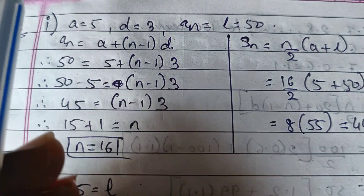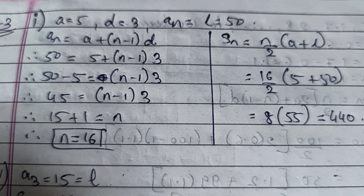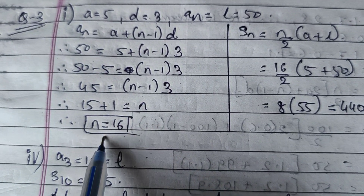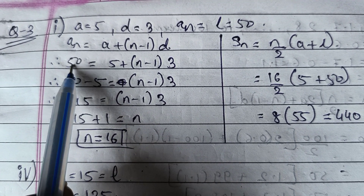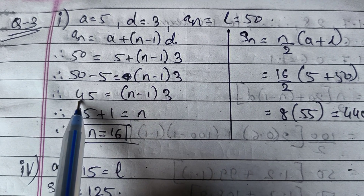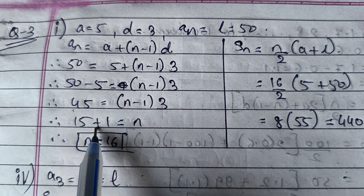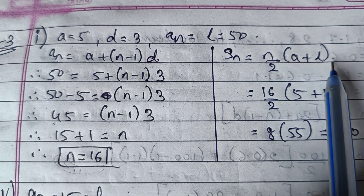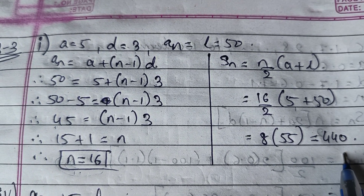Question 3 sub-question: A = 5, D = 3, AN (last term) = 50. First find N using AN = A + (N−1)D: 50 = 5 + (N−1)×3, so 45 = (N−1)×3, giving N−1 = 15, thus N = 16. Now apply Sn = n/2 × (A + L): S16 = 16/2 × (5 + 50) = 8 × 55 = 440.